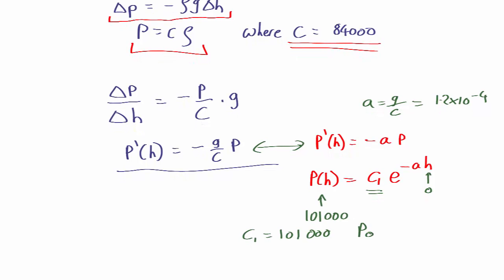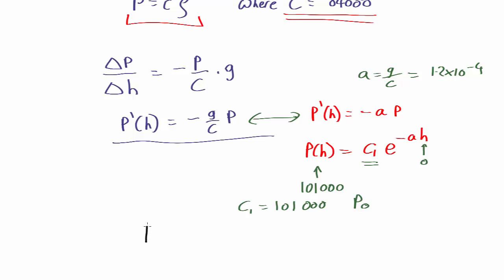So our final equation is that the pressure at some height h is equal to the pressure at sea level times e to the minus g over our constant C times the height.